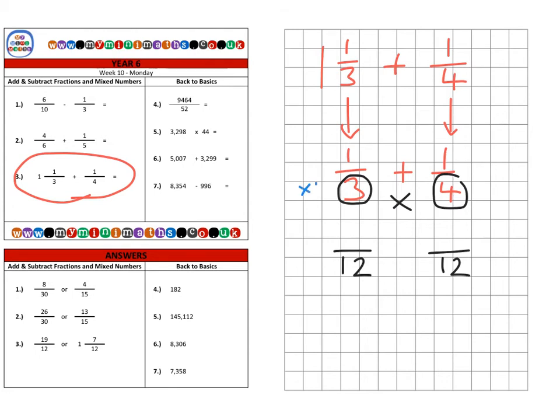I've multiplied the 3 by 4 to get the 12 here, so we need to do the same with the numerator. So 4 lots of 1 are 4. Here I've multiplied the 4 by 3 to get our 12 down here, so I do the same with its numerator. So 1 lot of 3, or 3 lots of 1, are 3. And we're going to add them together to get an answer of 7 over 12.